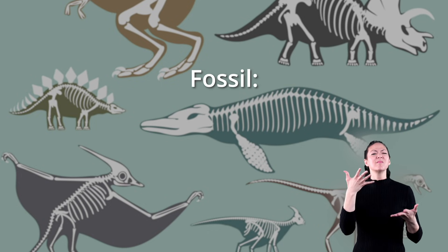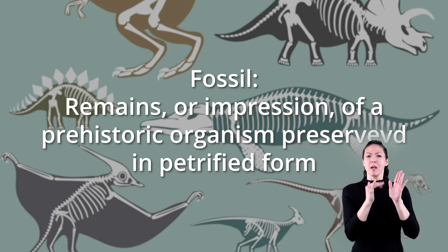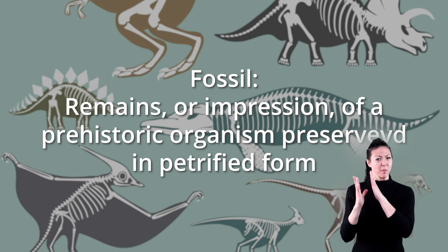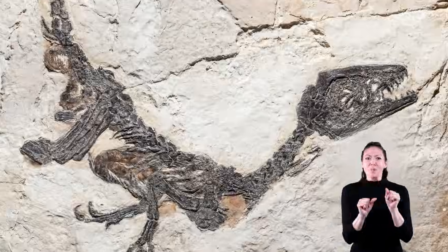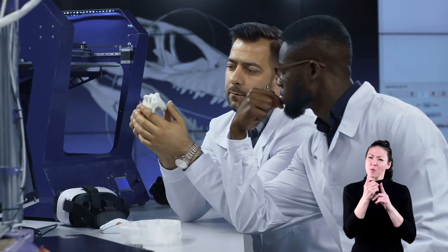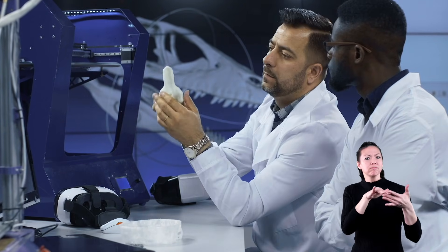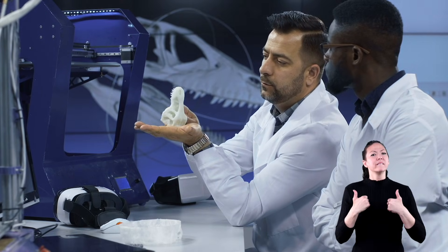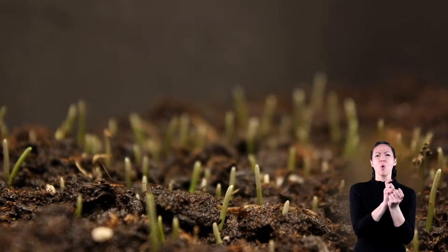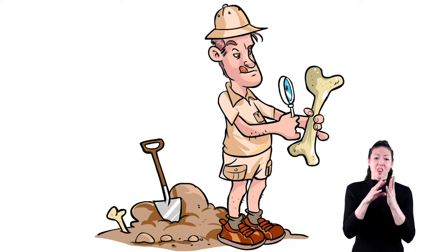A fossil is defined as the remains or impression of a prehistoric organism preserved in petrified form. If you've ever seen a fossil, they're really cool to look at, almost like works of art. But they're also very useful to scientists, who use them to learn about how animals and plants lived a long time ago, about how the Earth has evolved, and about how living matter has changed over time. You can learn a lot from a fossil.